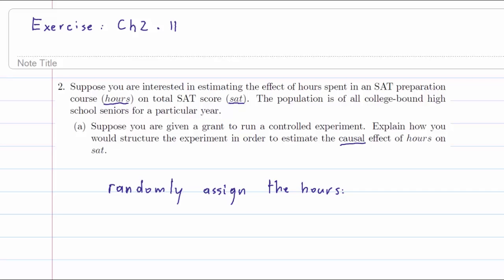By randomly assigning the hours, we are making sure that they stay independent of other variables that might affect the SAT scores. So what we want to have here is this condition satisfied: the expected value must equal zero. If we have independence, we will have this condition satisfied. We will have linear independence here.